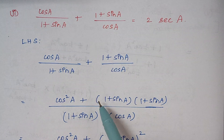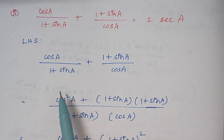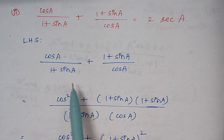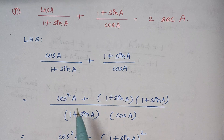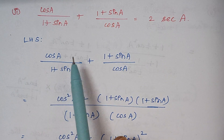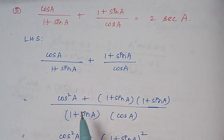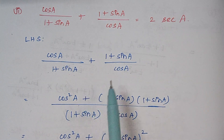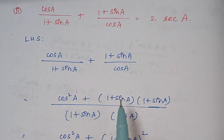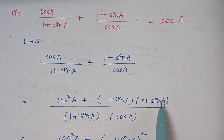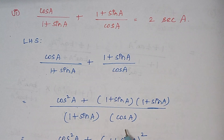In this case the first step is we are going to take LCM. So in the LCM the denominator terms will be 1 plus sin a into cos a. Here we are having 1 plus sin a, so we have to multiply by cos a — so cos a into cos a becomes cos square a. And here we are having cos a, so we multiply these two terms: 1 plus sin a into 1 plus sin a, divided by 1 plus sin a into cos a.